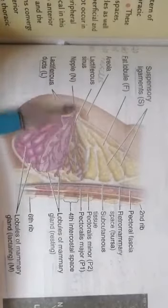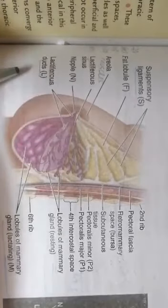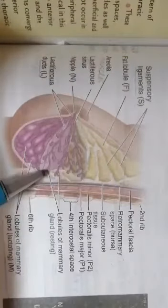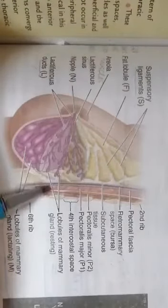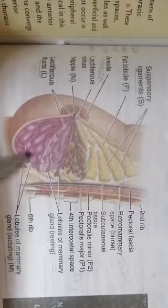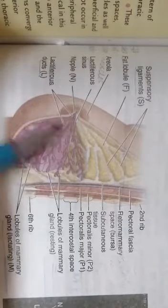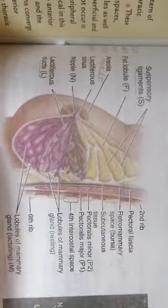The lactiferous sinus drains from the nipple, which is the small opening through the breast. In the lactating mother, there is production of milk and secretion from certain sebaceous glands and subcutaneous tissue. This is how milk is produced, how it travels through the lobules, and how it exits through the nipple. Now we're going to discuss the lymphatics, muscles, and nerve supply of the breast.